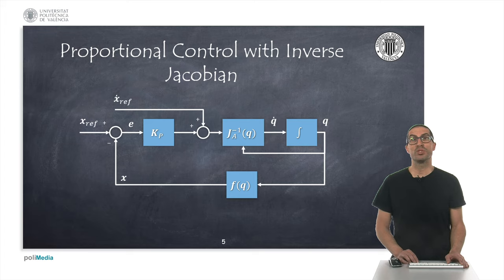The computed joint velocities will be the speed commands that we would send to the robot controller, and a low-level controller will ensure to follow these speeds at a higher bandwidth, so that from the point of view of this kinematic controller, the robot behaves as a pure integrator.